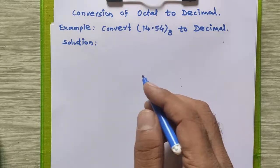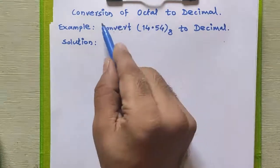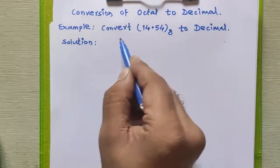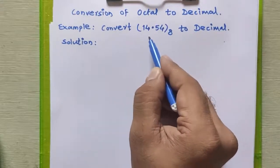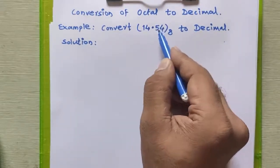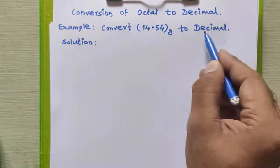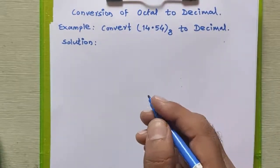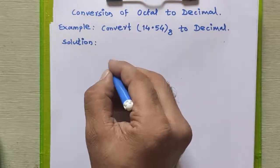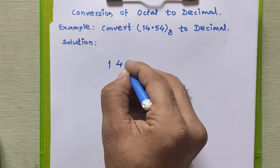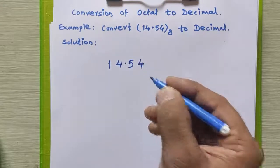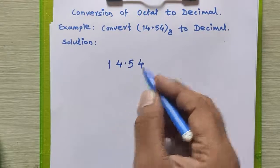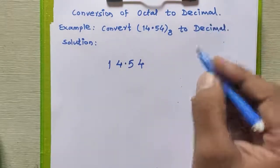Hello everyone. In this tutorial we will study how to convert any octal number to a decimal number. Consider this example: 14.54 octal. We have to convert this into decimal. To convert it, we need to multiply each octal digit by the positional powers of 8, and then find the sum to get the actual decimal number.